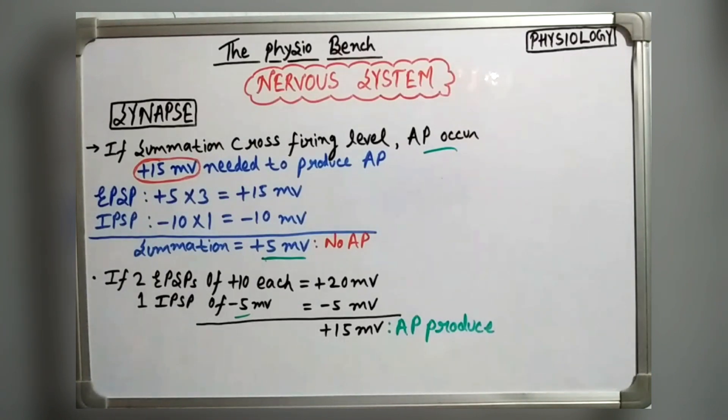Next example. If we have two EPSPs of plus 10 mV each, the total is 20 mV. And one IPSP is minus 5 mV, so what is the summation? Plus 15 mV. If we need more than 15 mV, then action potential will be produced.